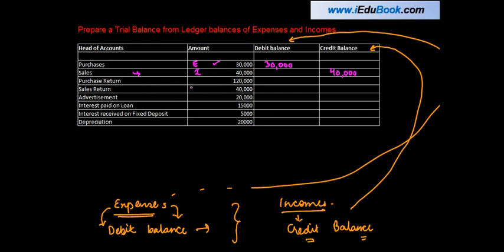Similarly, when you make a purchase return — suppose I made some purchases and then return some of those goods — purchasing is an expense, and what a purchase return does is it reduces this expense. So a reduction in an expense is kind of an income; it's not an income in a literal sense, but because it is reducing an expense, it has a credit balance. Let's say 20,000.